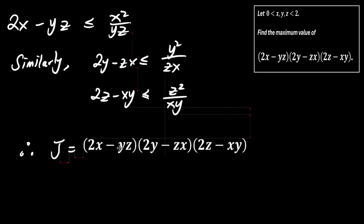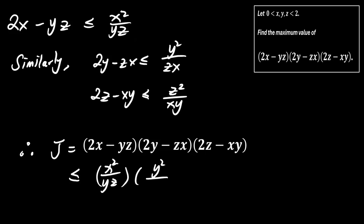So the value of J is at most x squared over yz times y squared over zx times z squared over xy. This simplifies to 1.